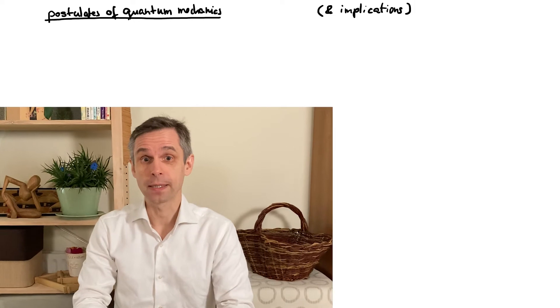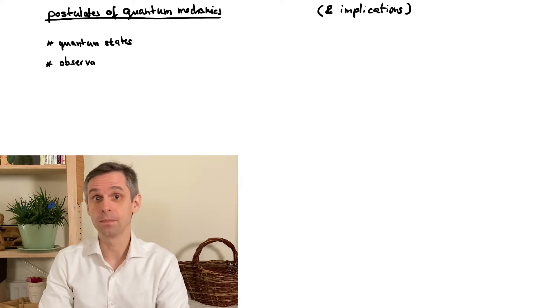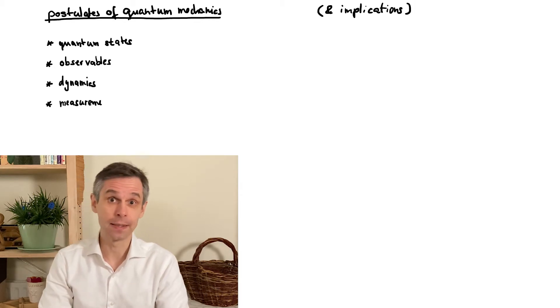This concerns four aspects of the theory: the quantum states, the observables, the dynamics and measurements, where the last one really fixes how we utilize and interpret our results.